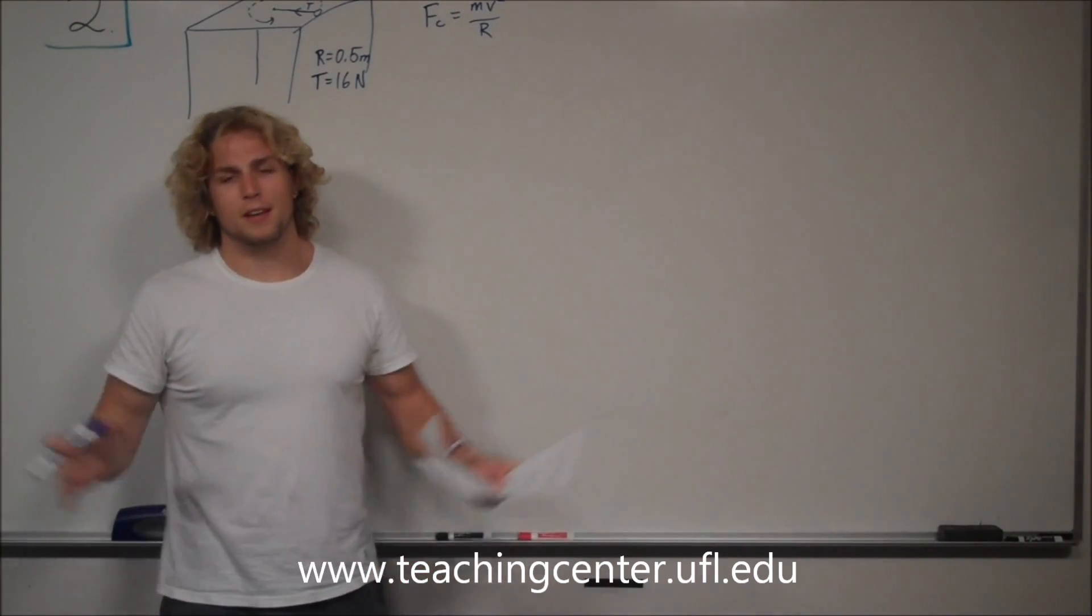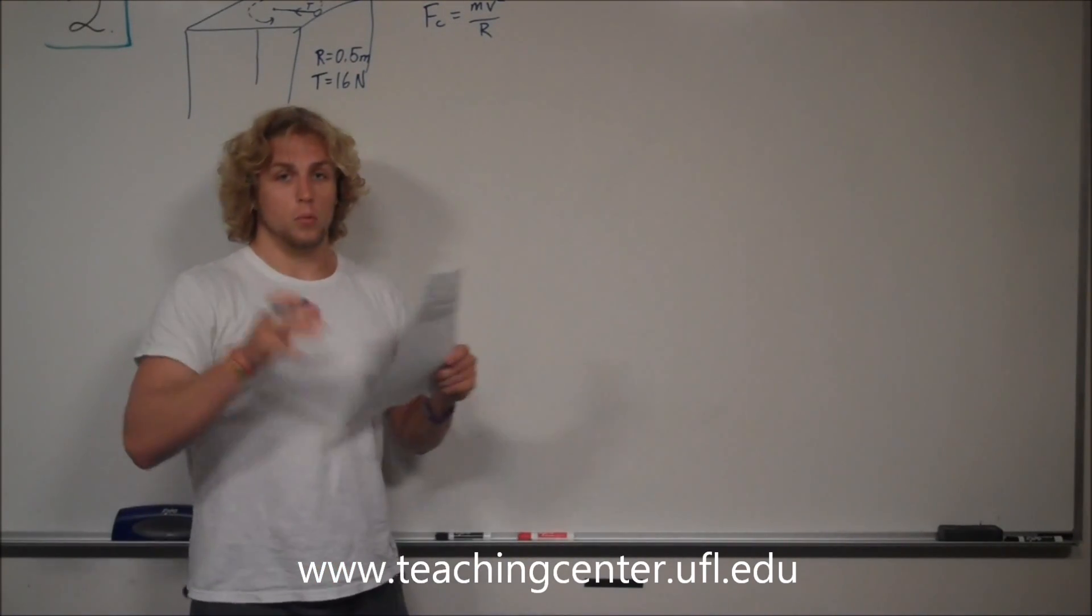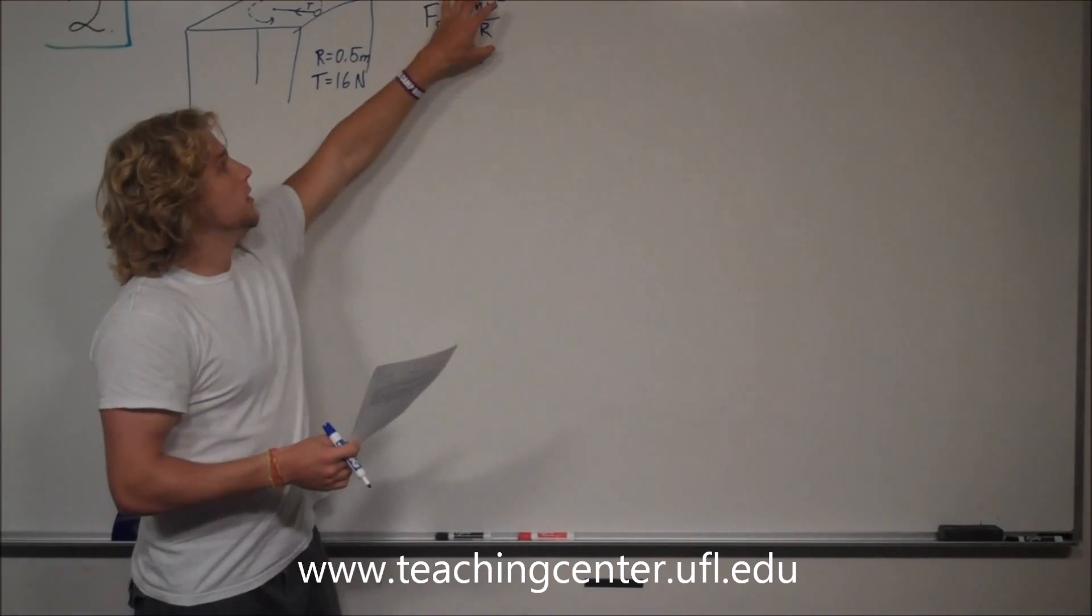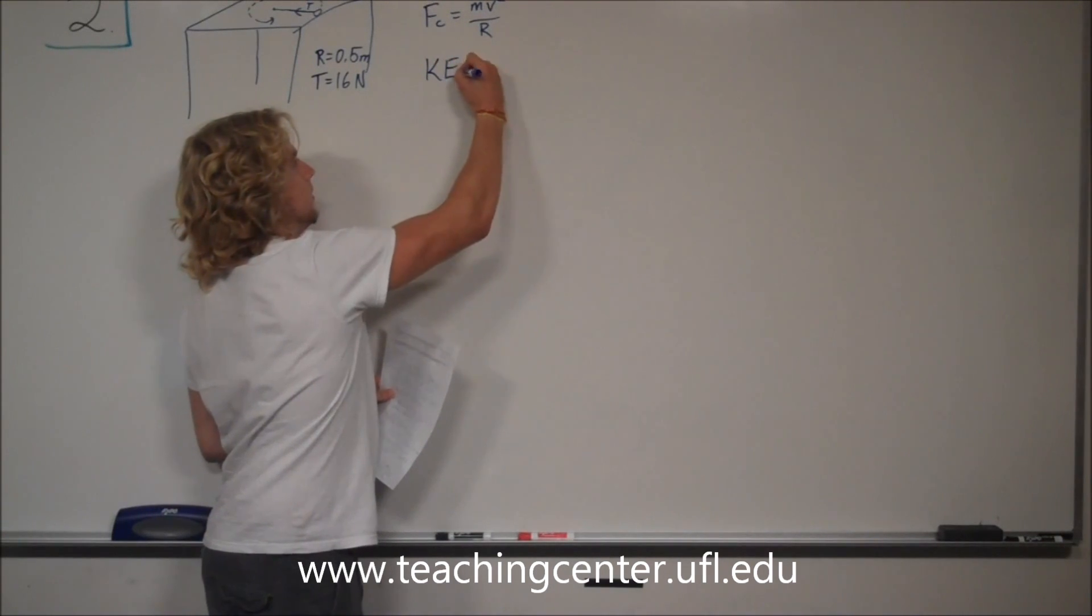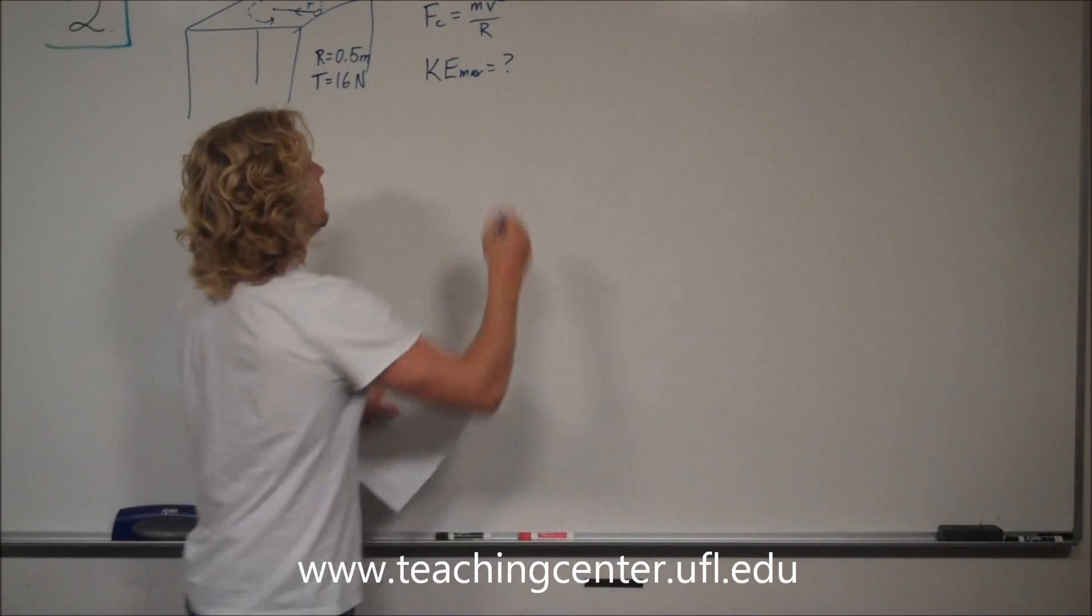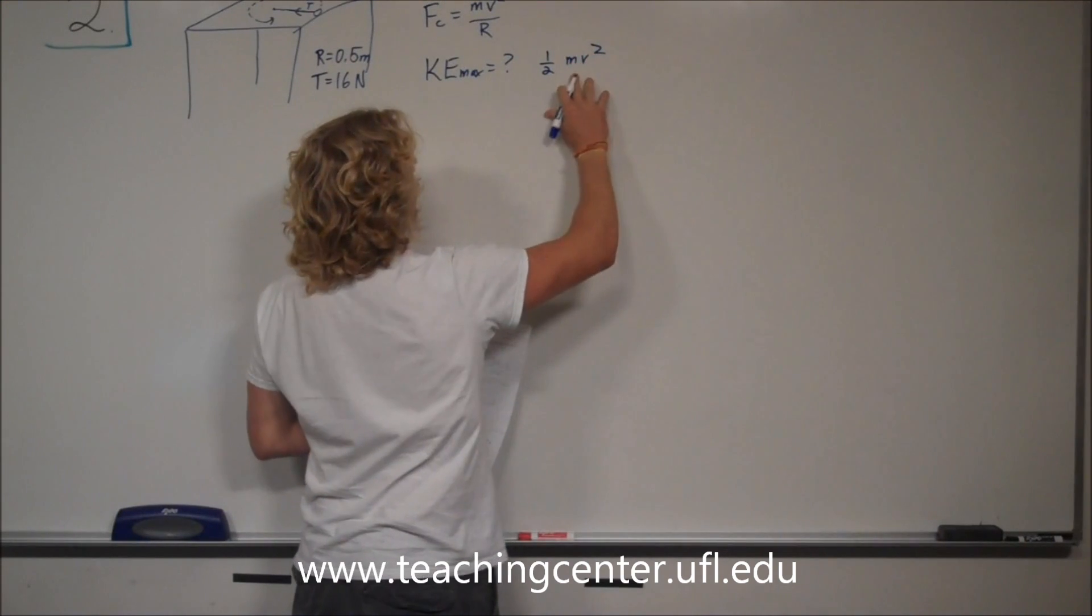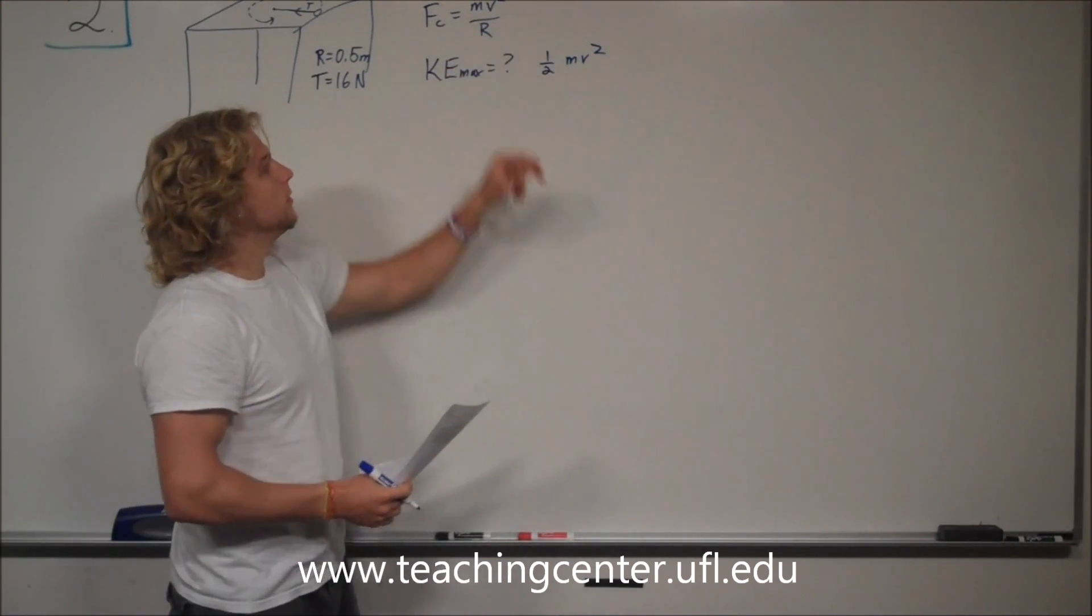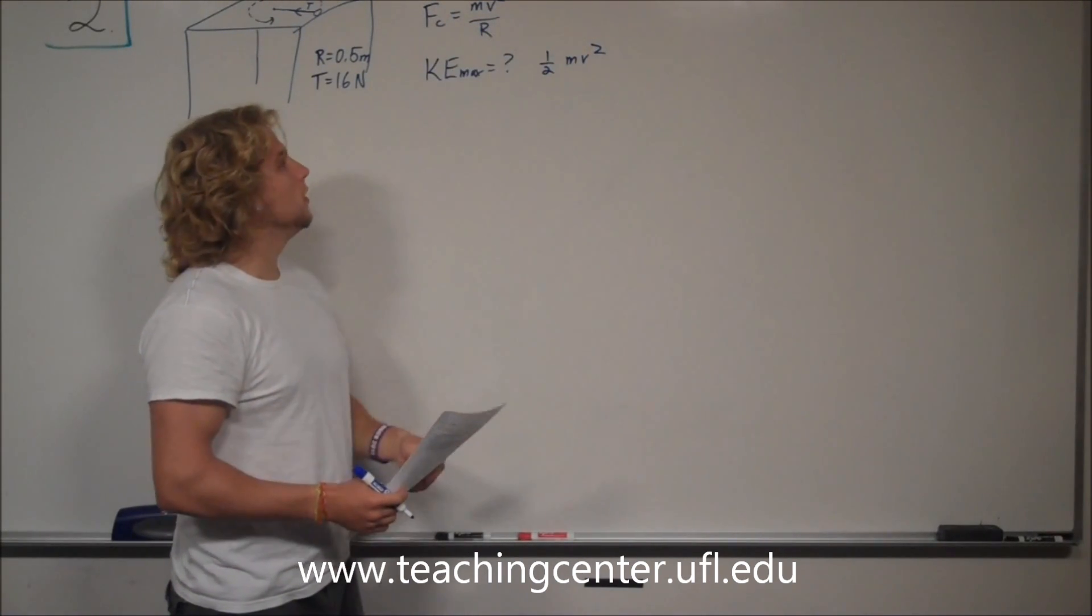With the tension at its max, that's when the kinetic energy will be at its max. Now that we know the max tension, we can use that to find the max kinetic energy. That's what we're trying to find. The formula for that is one-half mv squared. Do you notice there's a similarity? mv squared, mv squared. This has one-half, this has over r.